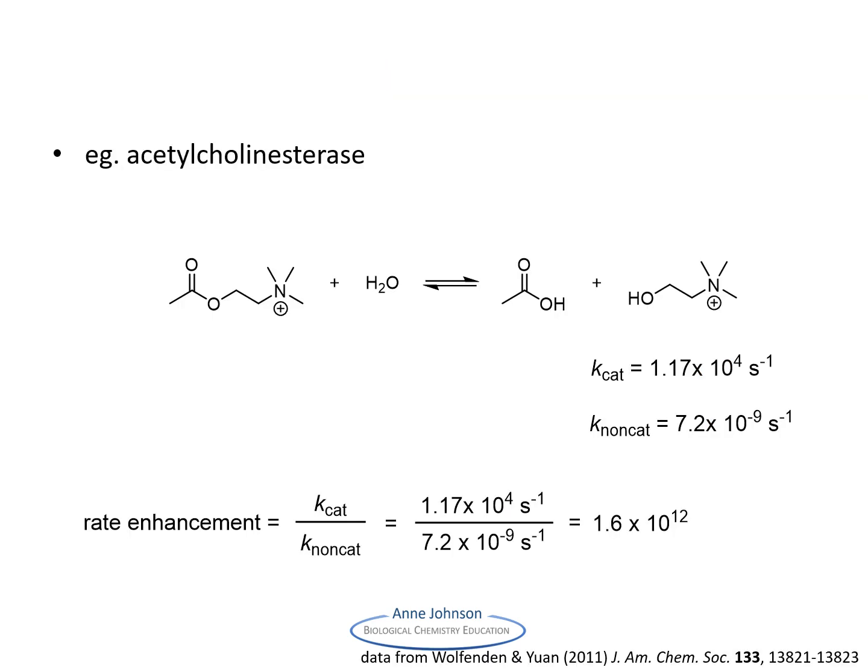As an example, let's look at the rate enhancement by the enzyme acetylcholinesterase, which catalyzes the hydrolysis of the neurotransmitter acetylcholine. The non-catalyzed neutral rate of hydrolysis of acetylcholine is 7.2 times 10 to the minus 9 per second at 25 degrees Celsius. The rate of the reaction when catalyzed by acetylcholinesterase is 1.17 times 10 to the 4 per second. This means that the rate enhancement is 1.6 times 10 to the 12.